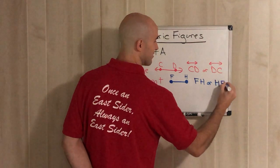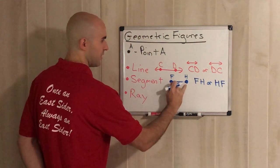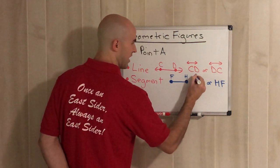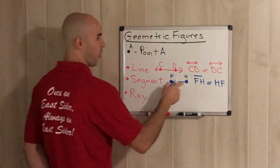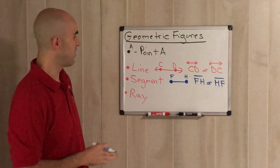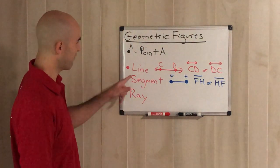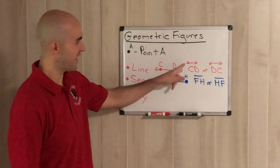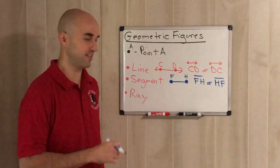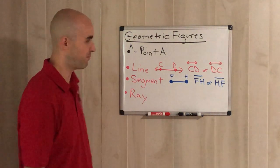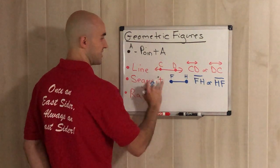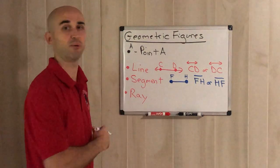With a segment, you can go left to right or right to left — we can call it FH or HF. Don't forget the segment notation on top to show it's a segment. Just remember the main difference: a line has two arrows and never ends; a segment has no arrows and always ends. A line never ends in both directions; a segment ends in both directions.